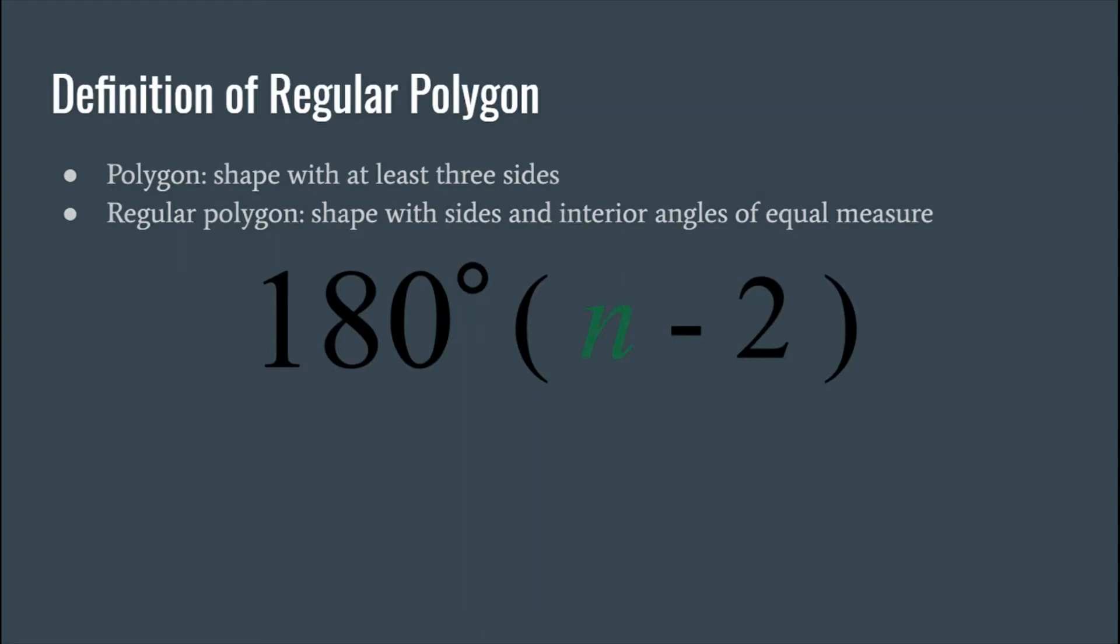If you want to find each individual interior angle, you would use the same formula but you would just divide the whole thing by n, the number of sides.